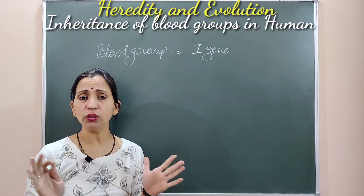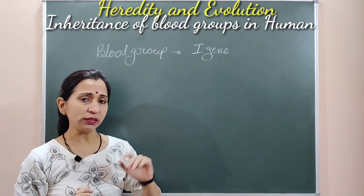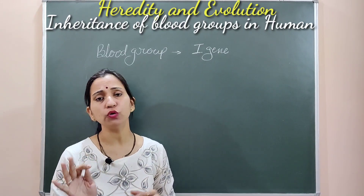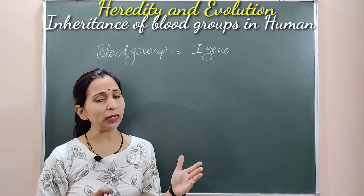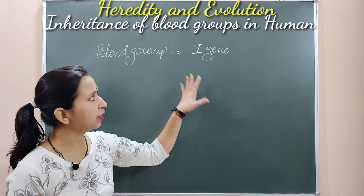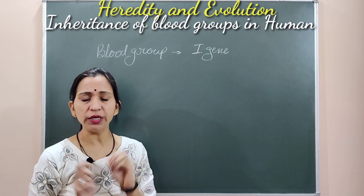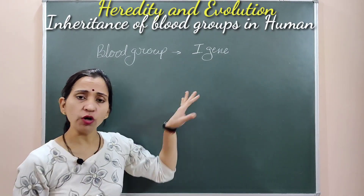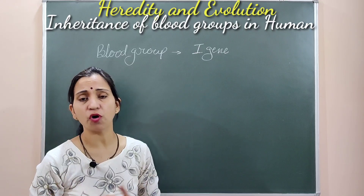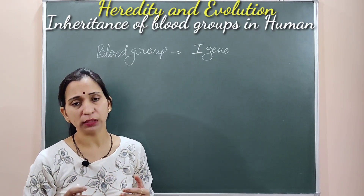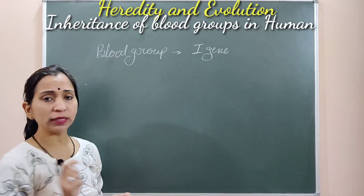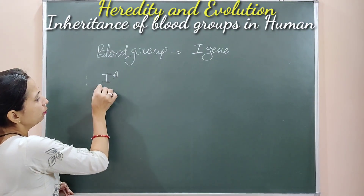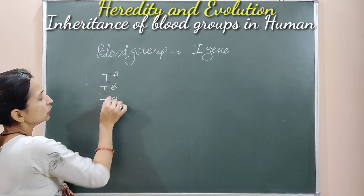These genes are found in three allelic forms. In Mendel's experiments — monohybrid, dihybrid crosses — we saw that each gene is found in two alternate forms: one dominant and one recessive. But here, in the case of I genes, there is an exception: this gene is not found in two alleles but in three alleles. The three alleles are Ia, Ib, and Io.